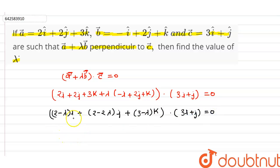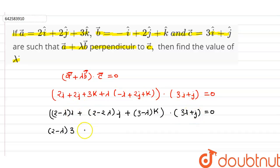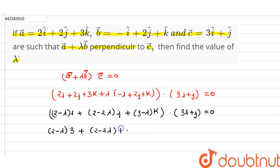When we do the dot product: the dot product of unit vector i with i is 1, so that term gives (2 minus lambda) into 3. The dot product of i with j is zero, so that term vanishes. The dot product of j with j is 1, so the next term gives (2 plus 2lambda) into 1.